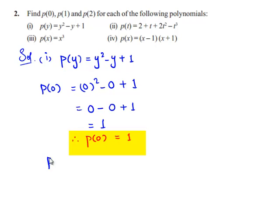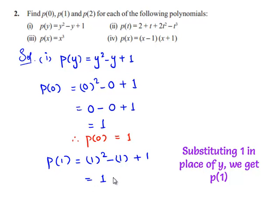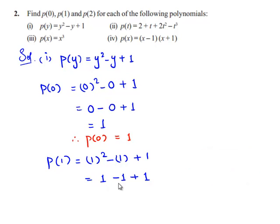Next, p of 1 is equal to 1 square minus 1 plus 1. 1 square is 1, minus 1 plus 1. 1 minus 1 is 0, and 0 plus 1 is 1. Therefore, p of 1 is equal to 1.